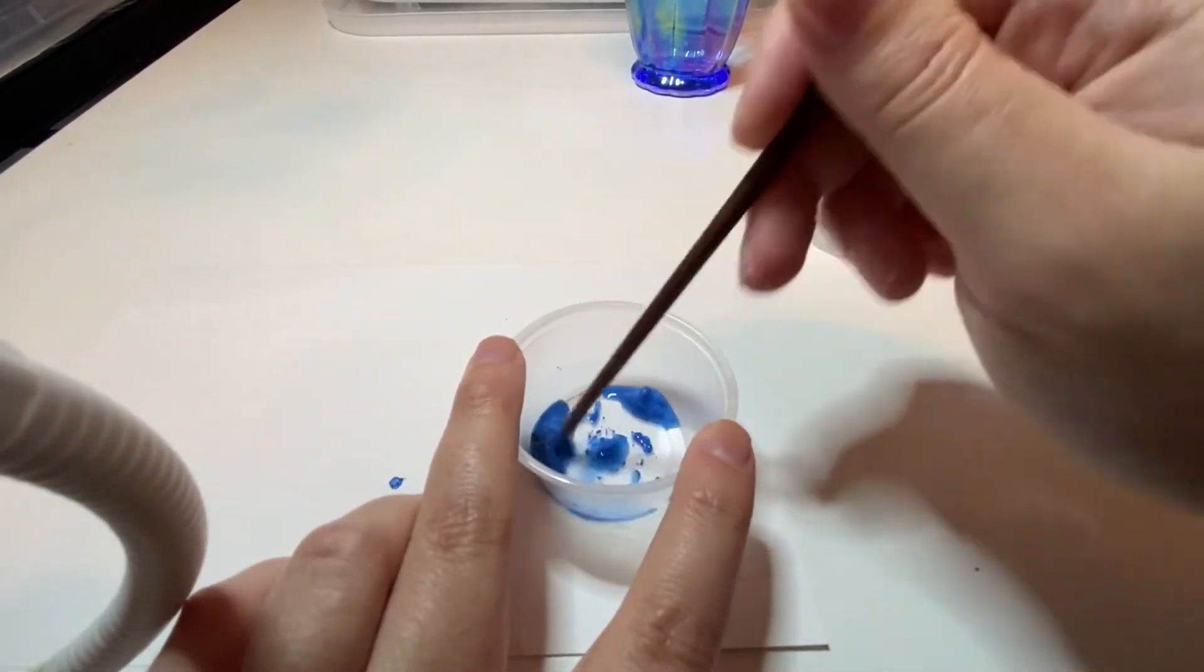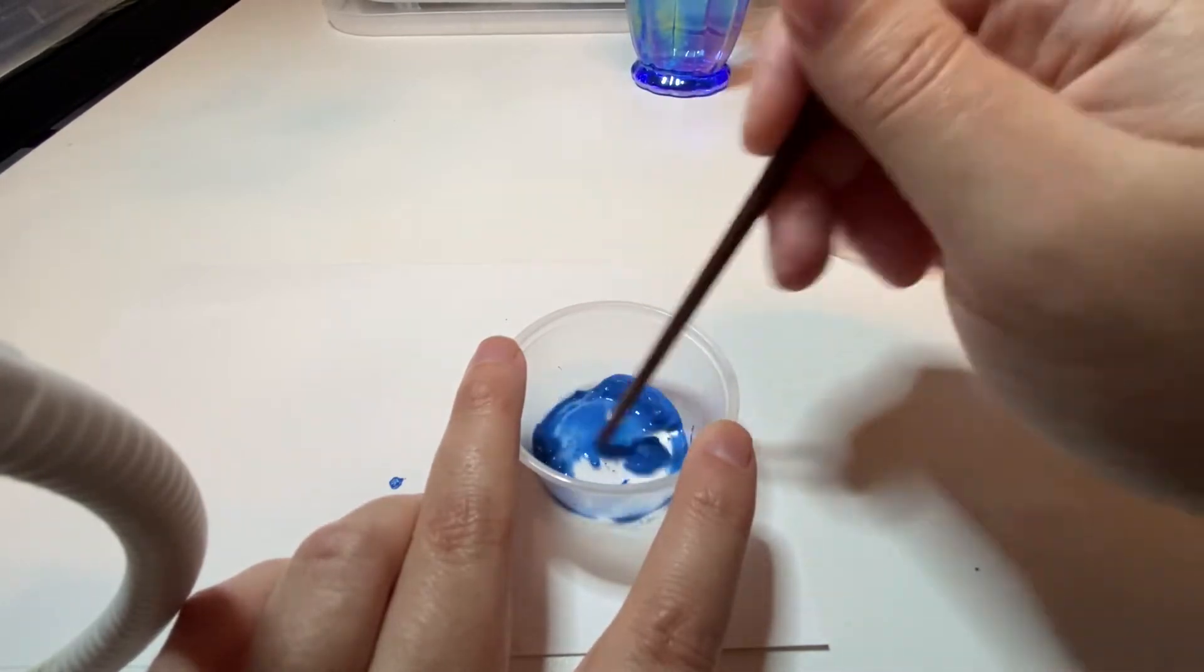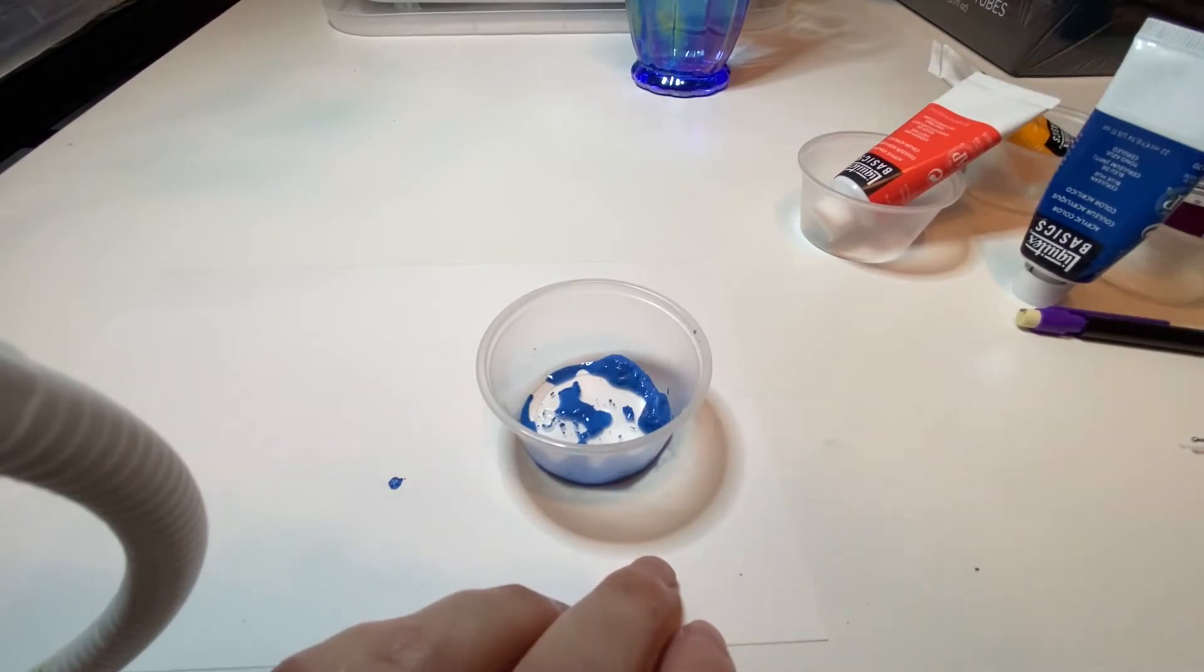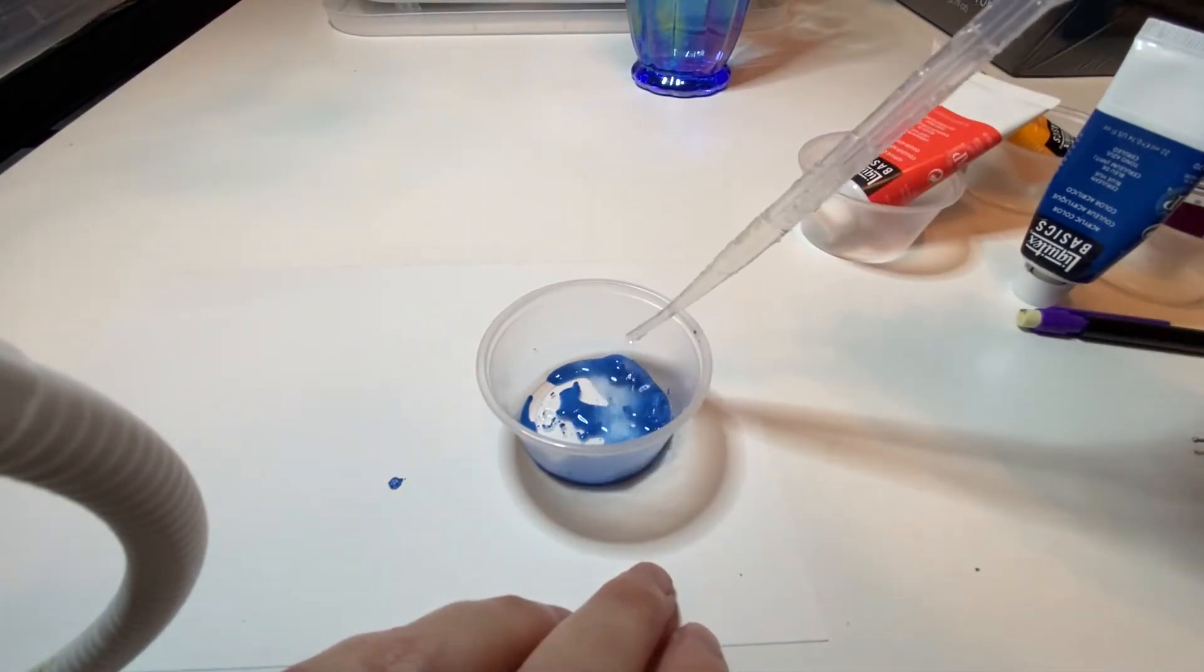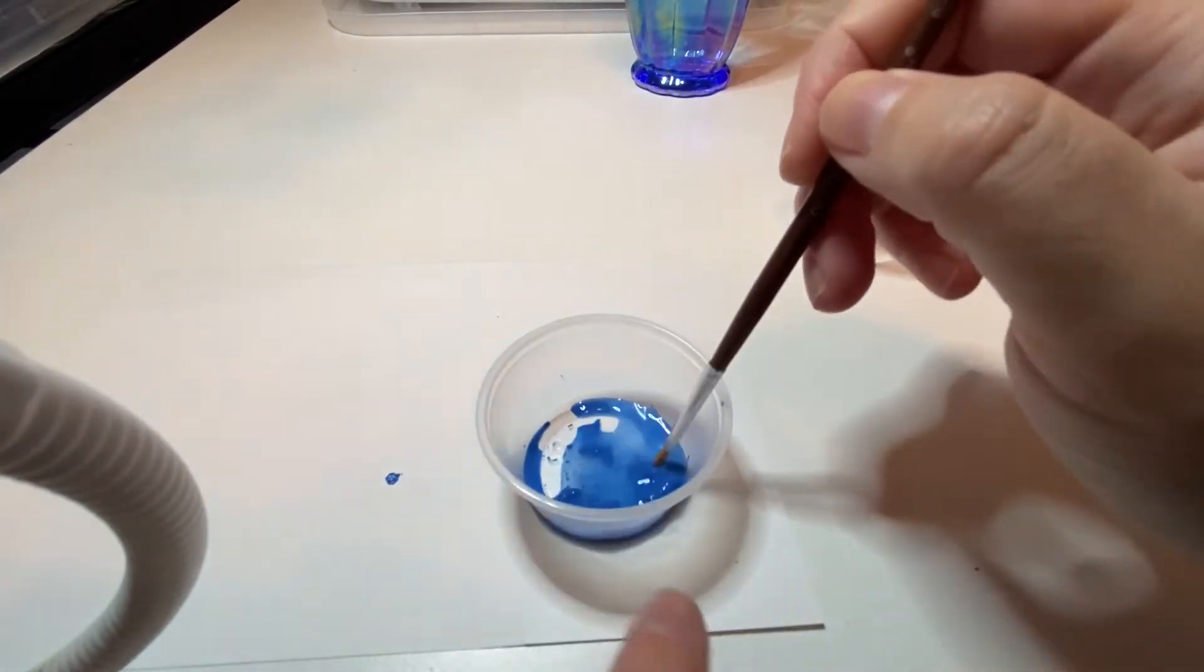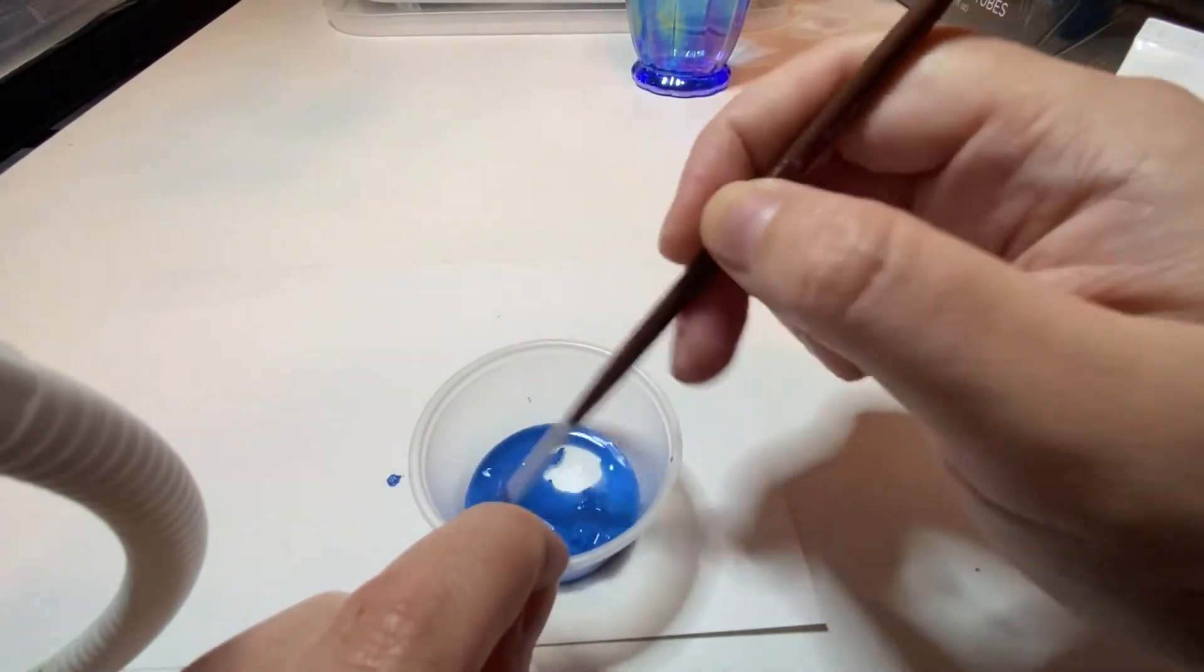So I'm just mixing a little bit of water in and keep in mind that when you're mixing the water in less is more. You can always add more water if you need, but you can't take water away. The consistency that you're trying to get to is of a really thin yogurt.